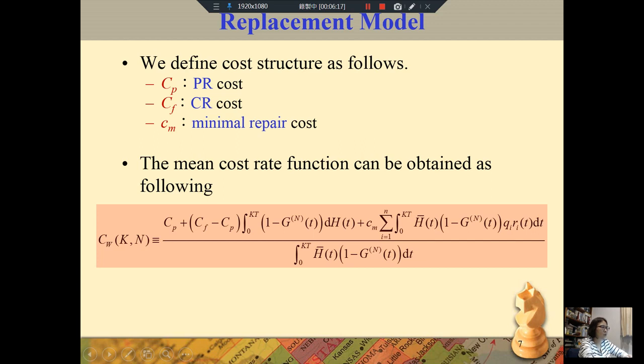We define the cost structure as the following: Cp is PR cost, Cf is CR cost, and Cm is minimal repair cost. The mean cost rate function can be obtained as the following equation CW(K,N). Please refer to it.